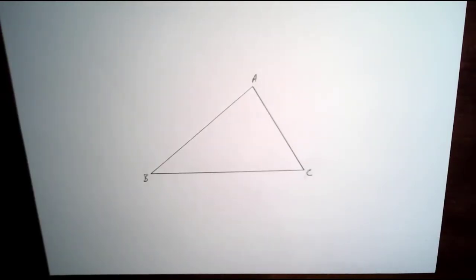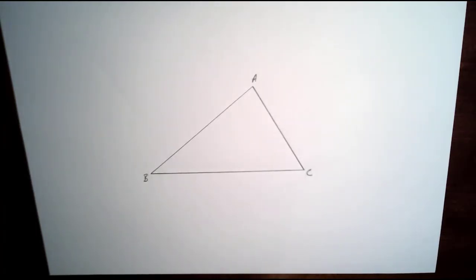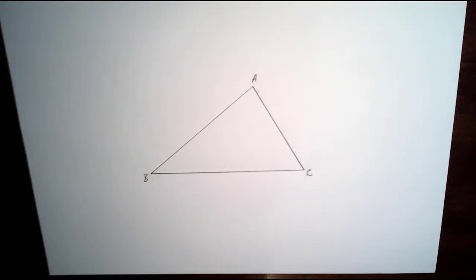In this video I'm going to construct a centroid of this triangle. The centroid is the center of gravity of the triangle, so what we've got to do is construct two medians, and where the medians intersect, that's the centroid — that's the center of gravity of the triangle.